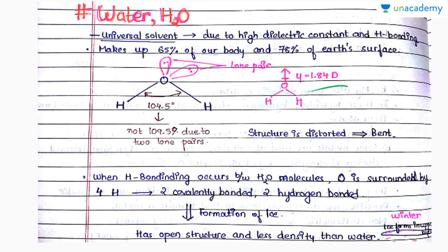When hydrogen bonding occurs, oxygen is surrounded by 4 hydrogens: 2 covalently bonded and 2 hydrogen bonded. When it forms ice, the structure is open structure and ice has density lower than that of water.